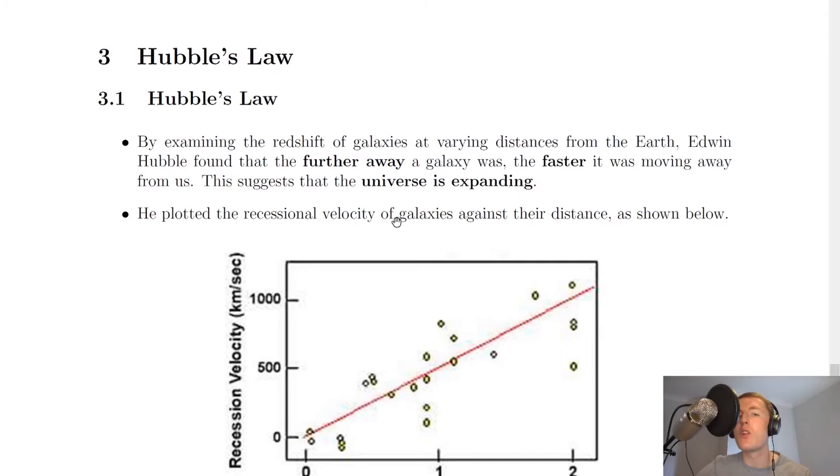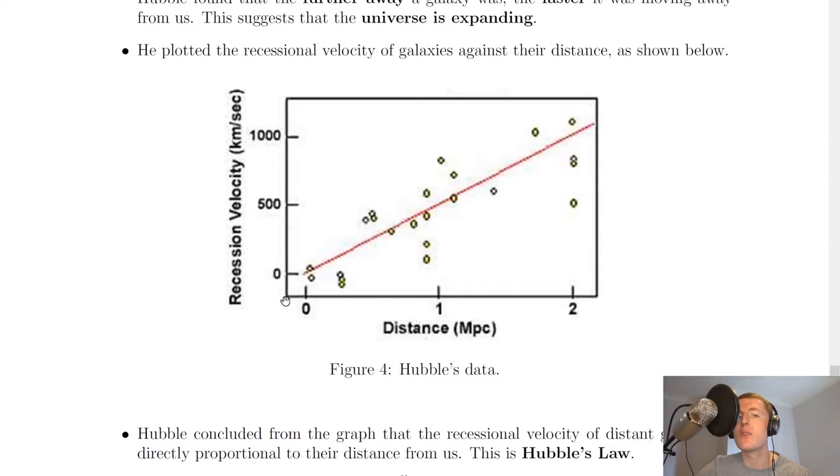He plotted the recessional velocity of galaxies against their distance as shown below. So here's a graph of recessional velocity against distance. Just before I go into more detail about this picture though, I'm going to show you a quick animation on how he collected the data.